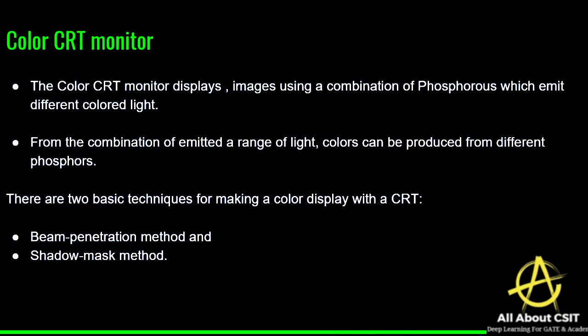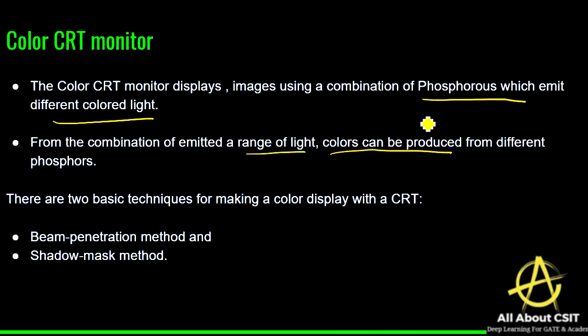Now let's look at the color CRT monitor. The color CRT monitor displays images using a combination of phosphorus which emits different color light. From the combination of emitted light, a range of colors can be produced from different phosphorus. There are two basic techniques for making a color display with the CRT: beam penetration and shadow mask.